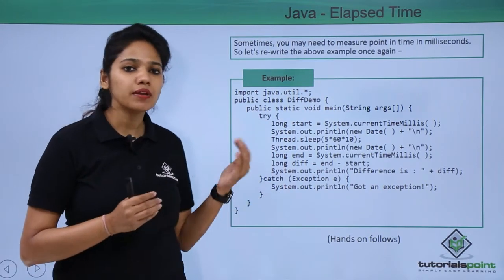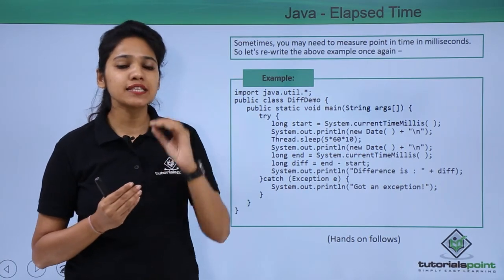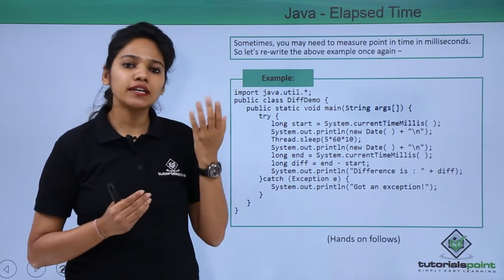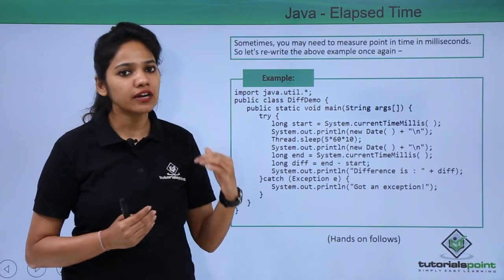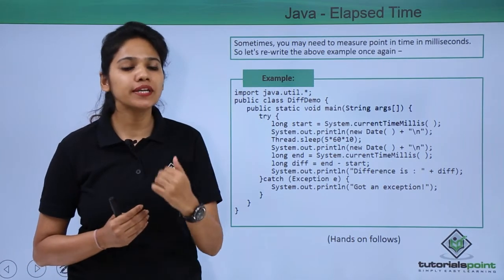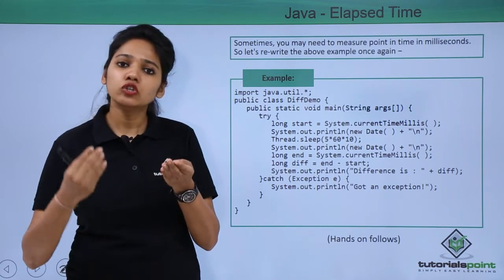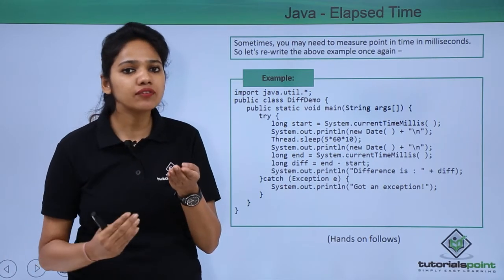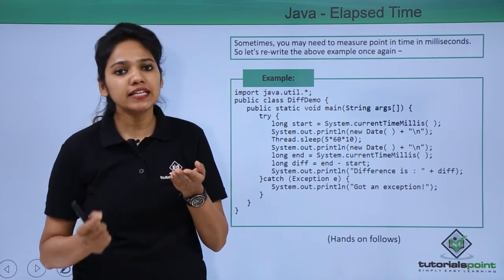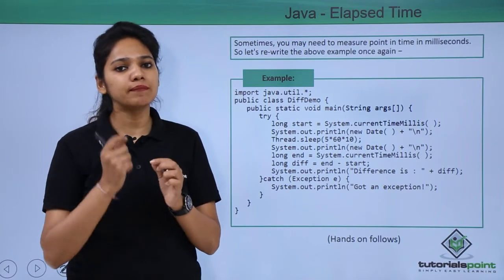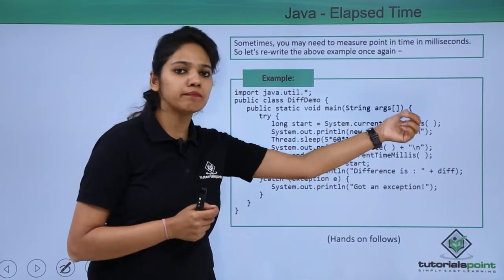In this program, we want to learn what is the difference of those milliseconds when the thread was run at the start and then after 3 seconds. When the thread runs at start, there would have been certain milliseconds. And when you run the program again after 3 seconds, there are again certain milliseconds. We look at the difference between these milliseconds using the currentTimeMillis method.